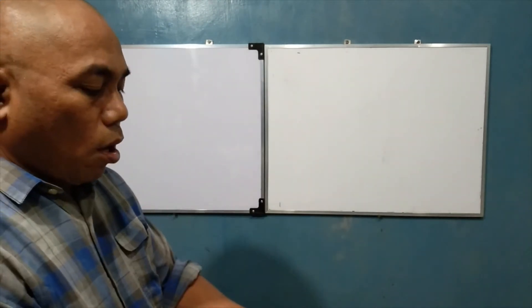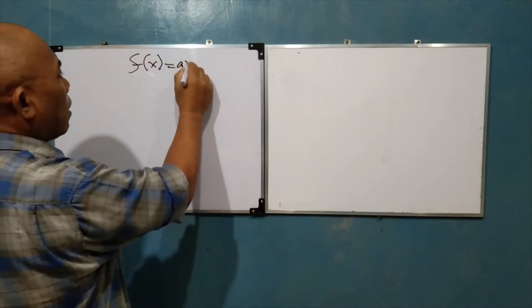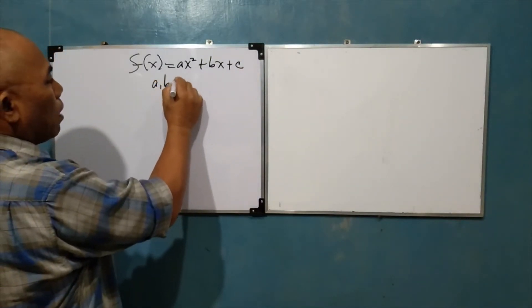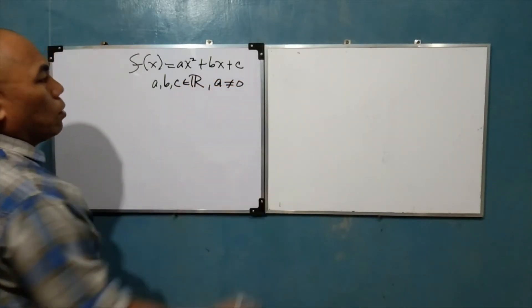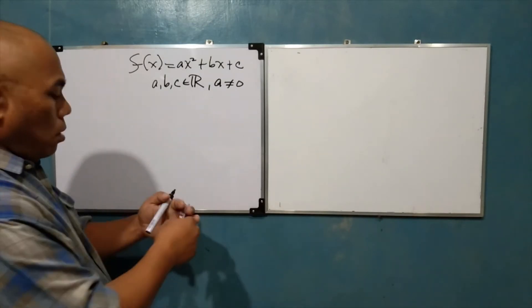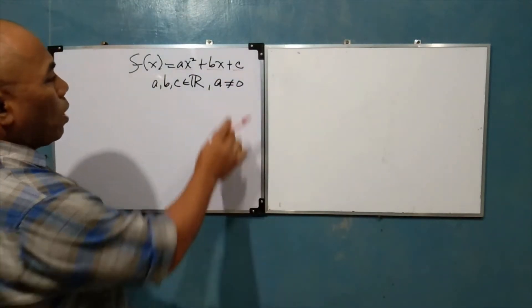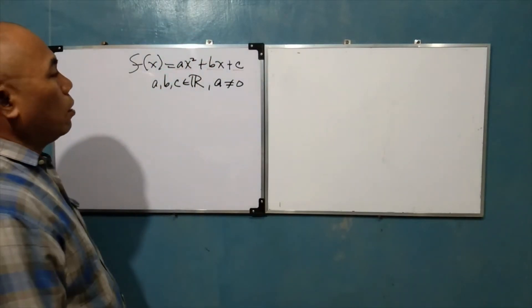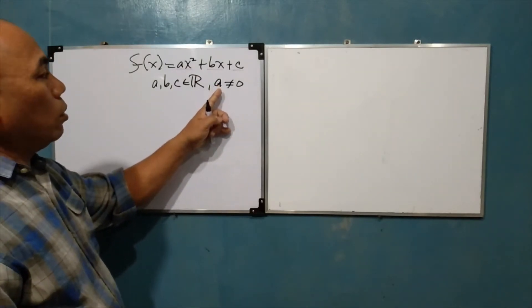This time, we are going to discuss a transformation of the quadratic function f(x) = ax² + bx + c, where a, b, and c are real numbers and a cannot be equal to zero. This is our quadratic term, our linear term, and our constant term. We have this restriction that a cannot be equal to zero because when a equals zero, the quadratic term becomes zero and the function becomes linear.